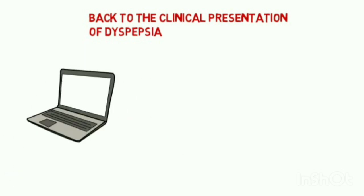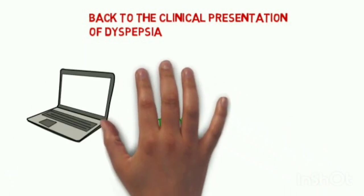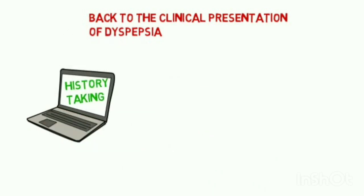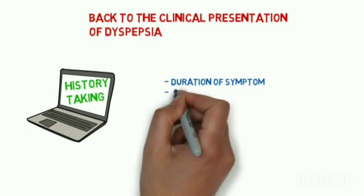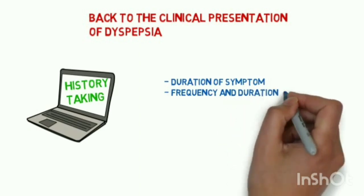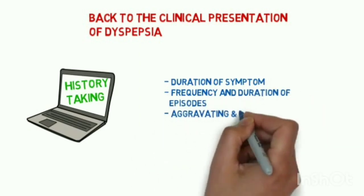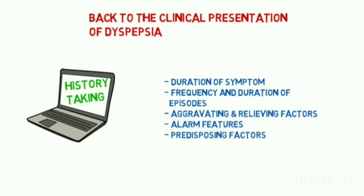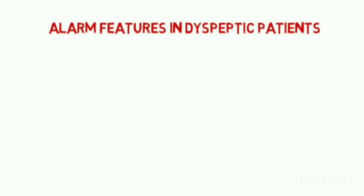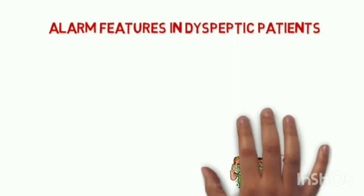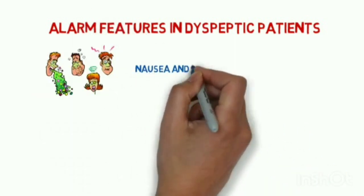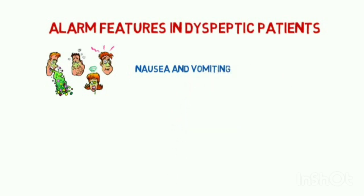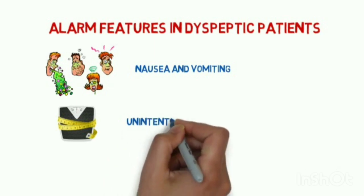When taking a history, assess: duration of symptoms, frequency and duration of episodes, aggravating and relieving factors, alarming features, and predisposing factors. The alarming signs and symptoms in dyspeptic patients include nausea and vomiting, and unintentional weight loss.